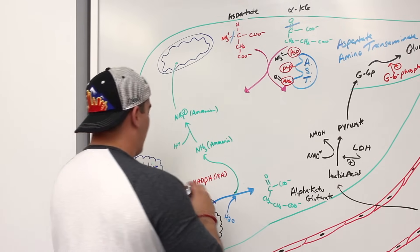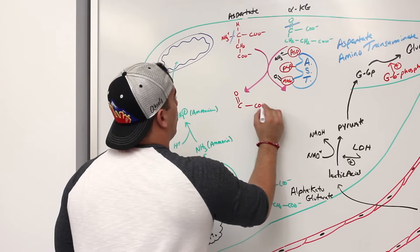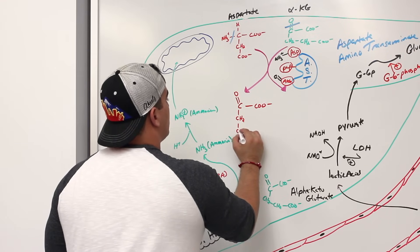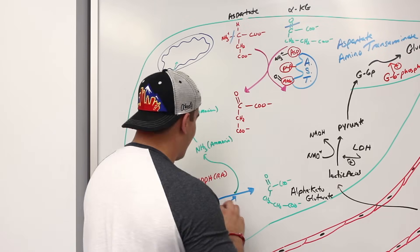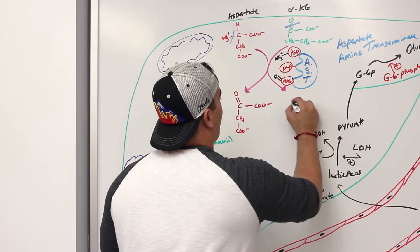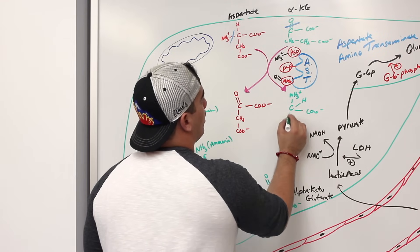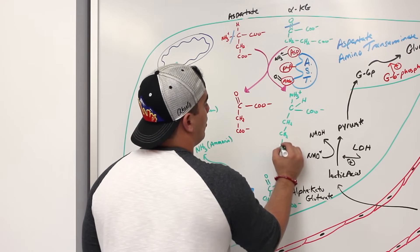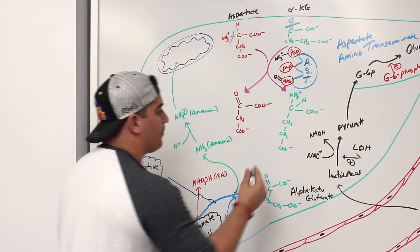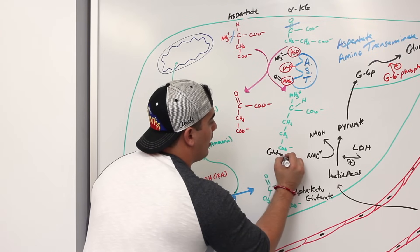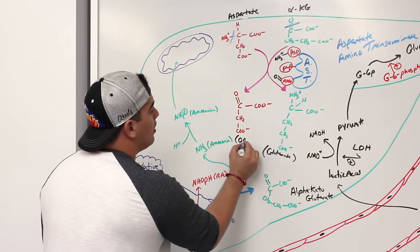Aspartate gains the oxygen and loses its amine group. What you get is: double bond oxygen, carboxyl group, CH2, COO negative — that is oxaloacetate. And then alpha-ketoglutarate gains the amine group to become: NH3+ group, a hydrogen, carboxyl group, CH2, CH2, carboxyl group — that is glutamate. So from aspartate and alpha-ketoglutarate you get oxaloacetate and glutamate.